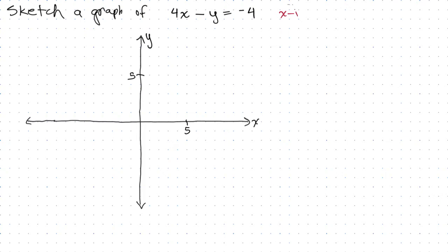To get the x-intercept, that means it's on the x-axis, and every point on the x-axis, y is 0. So we're going to take our equation, 4x - y = -4, plug in 0 for y, and then solve for x.